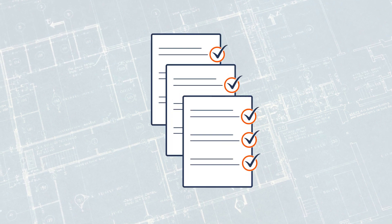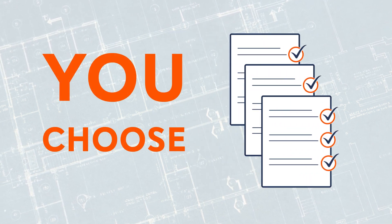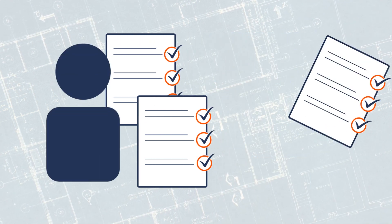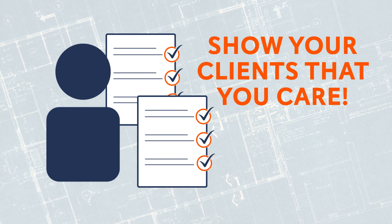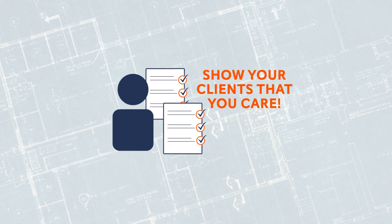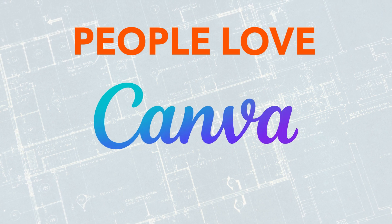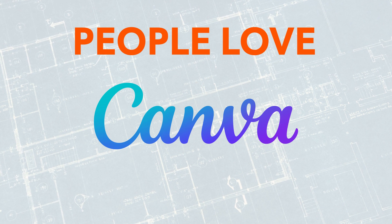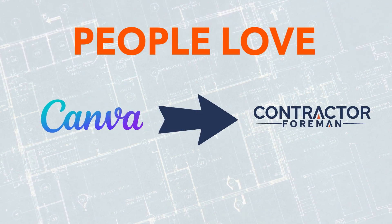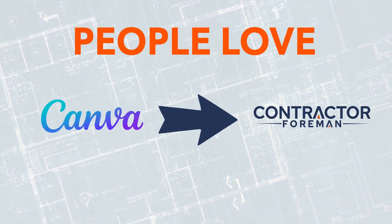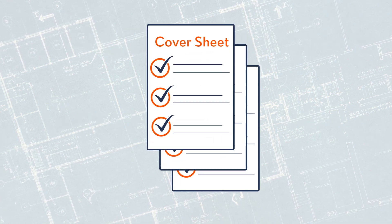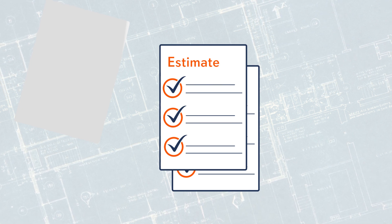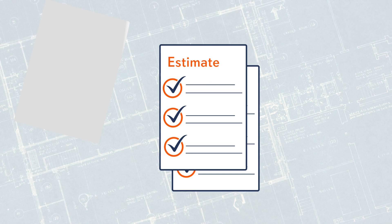The Document Writer allows you to create the different pages and then lets you choose which items are included in the proposal sent to your clients. This shows your client that you not only care, but you also understand the project and have the experience to complete the job. People love Canva.com because of the ease of use it provides in creating awesome looking documents. Contractor Foreman makes it easy for you to import your graphics from Canva or other sources and use those as pages within the Document Writer, allowing you to create an amazing looking proposal package that has your estimate perfectly positioned within it to maximize the impression you make on your client.